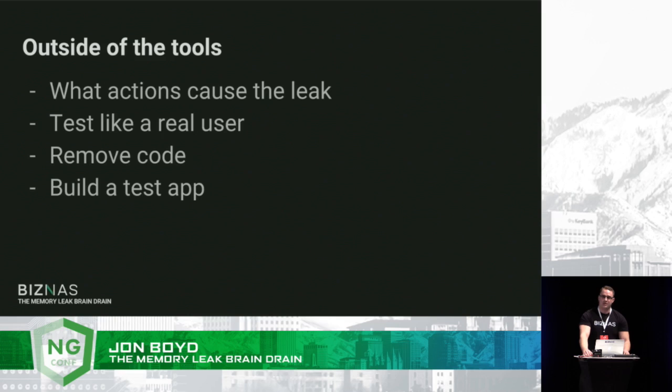You can start removing code if you think there's anything that might be problematic — maybe a certain third-party library, or a certain directive or component. And if you can't remove whatever that is, maybe it's an integral third-party library, build an app using just that or using what you think are the problem elements and see if the leak persists there.